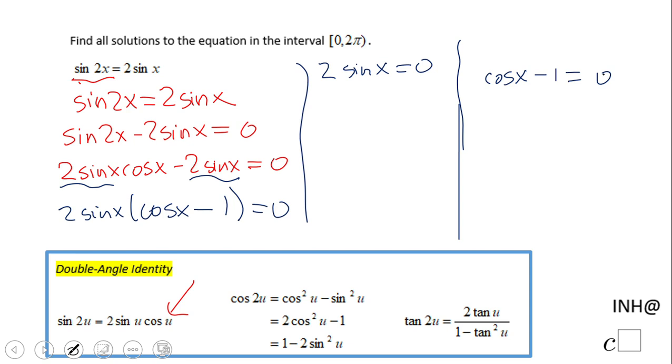So let's start with the first one, which obviously gives us sine of x equals 0. And now we're going to look on the unit circle, or hopefully memorize, when sine of x is 0 on 0 to 2 pi. And one time it's at 0.